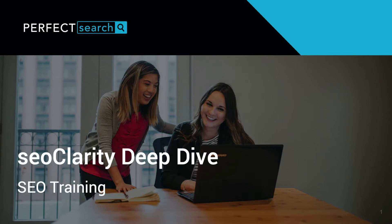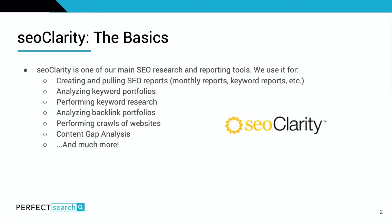Hi, in the SEO Clarity Deep Dive training, we will be walking through the various capabilities of SEO Clarity, in particular using different tools within the research grid. SEO Clarity is one of our main SEO research and reporting tools. We use it for a variety of things, such as creating and pulling SEO reports like monthly reports and keyword reports, analyzing keyword portfolios for client websites and competitors, performing keyword research, analyzing backlink portfolios, performing crawls of websites, performing content gap analyses, and more.